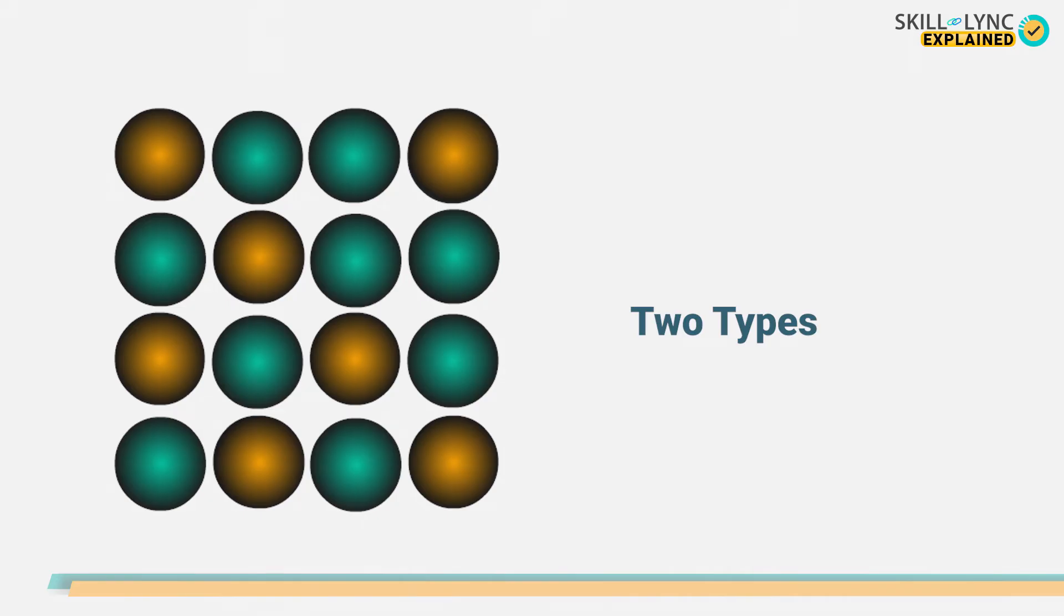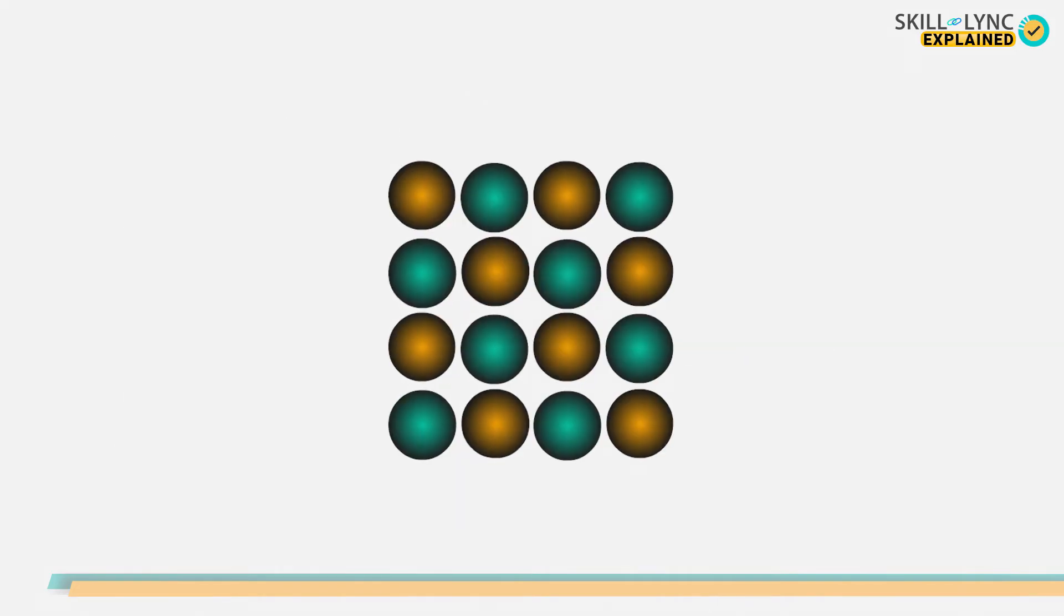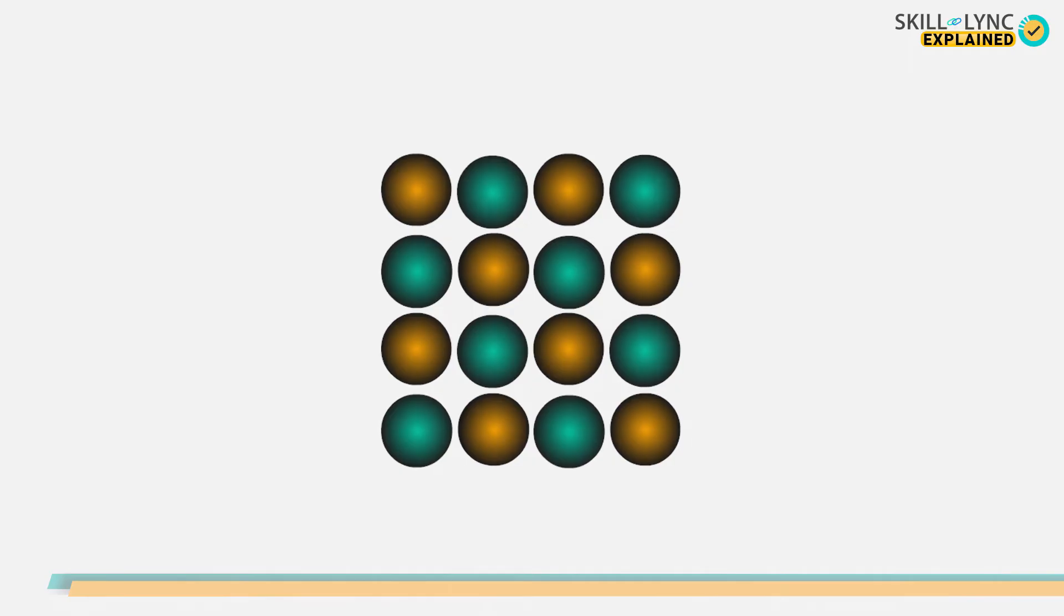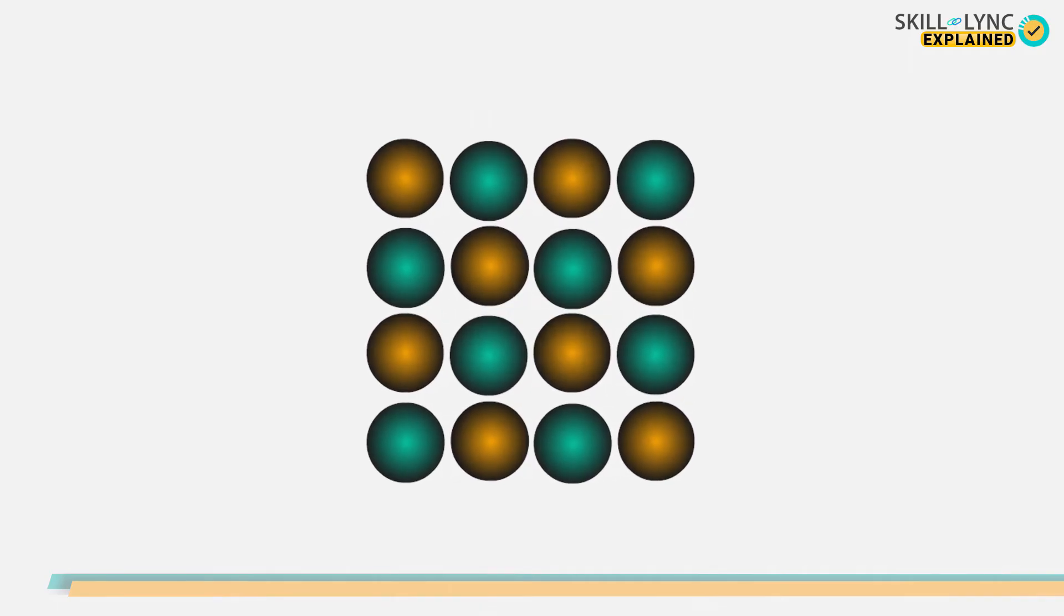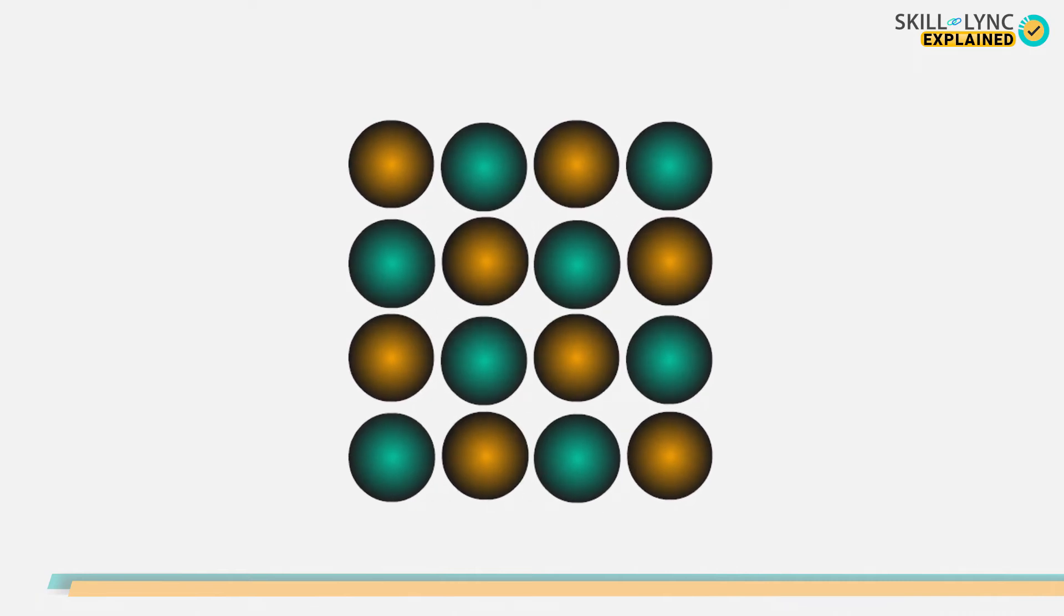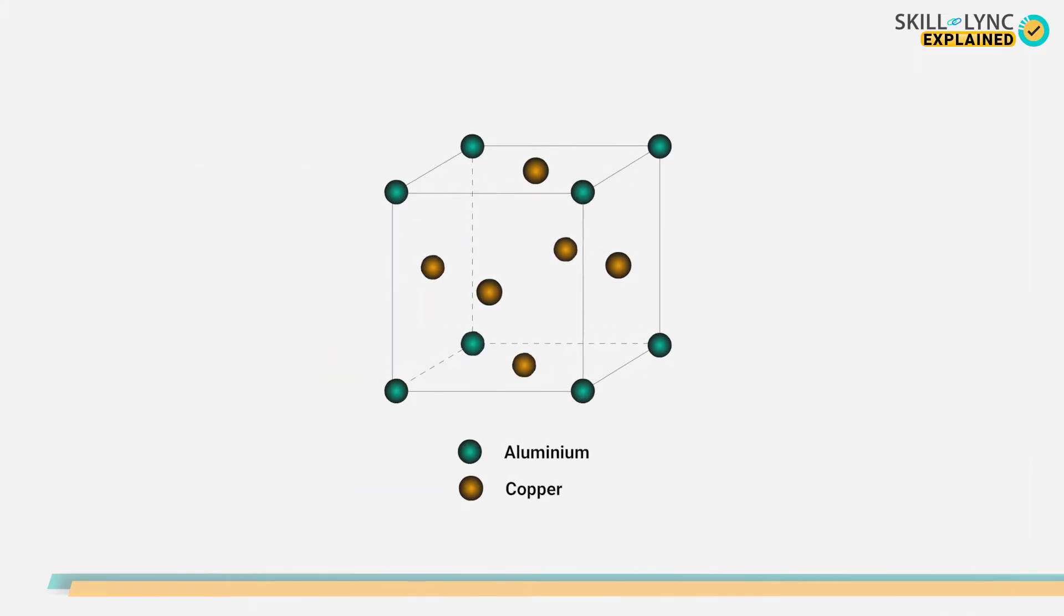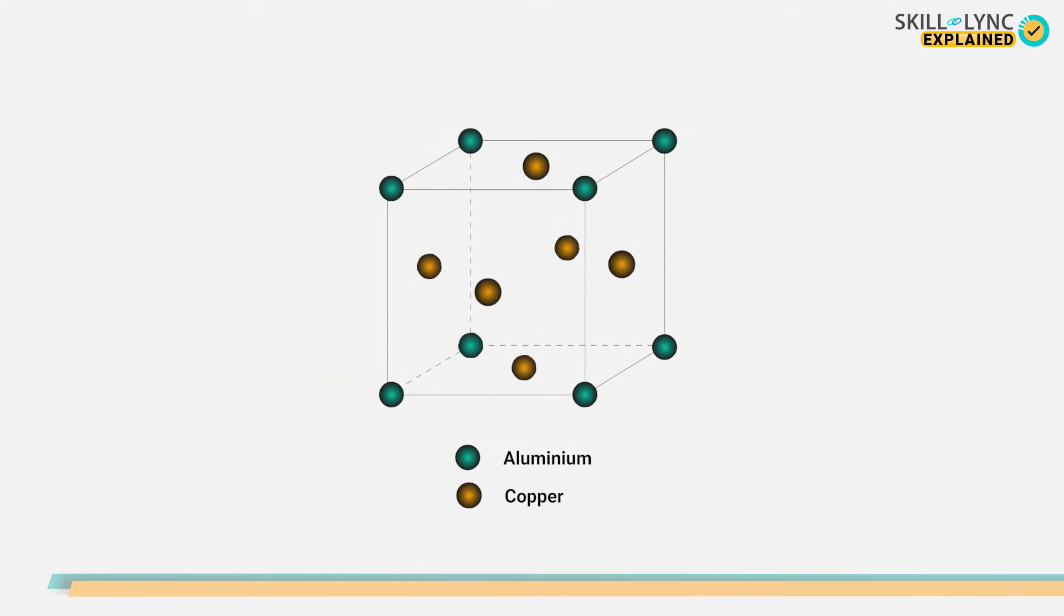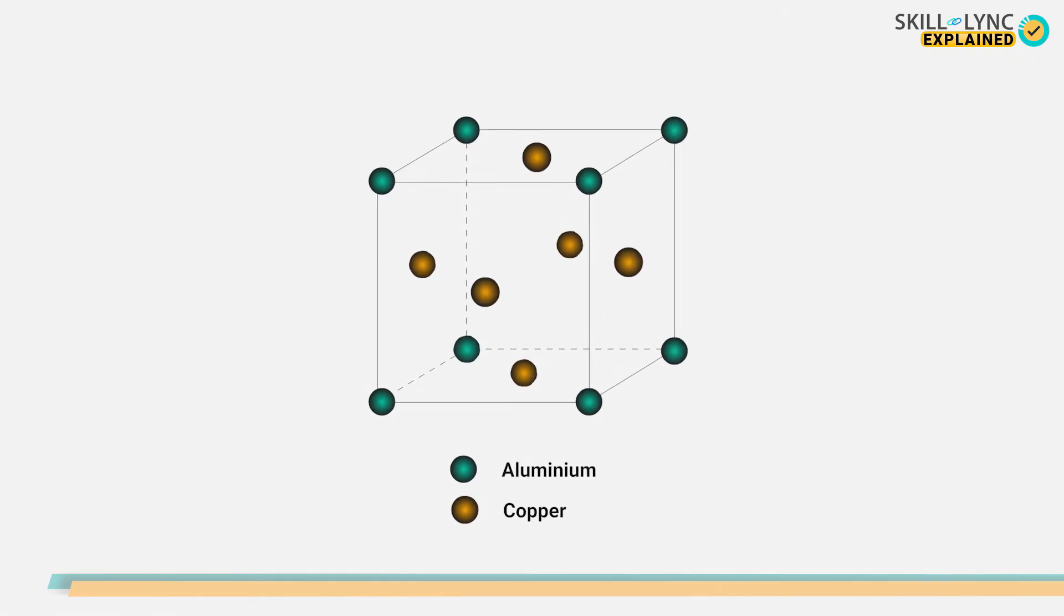Substitutional solid solutions can be further classified into two types: ordered solid solution and disordered solid solution. In an ordered solid solution, the solute atoms take a fixed position among the solvent atoms and are arranged in an orderly manner. This type is seen in aluminum-copper solid solution, where the aluminum atoms occupy the corner position and the copper atoms occupy the face-centered position.